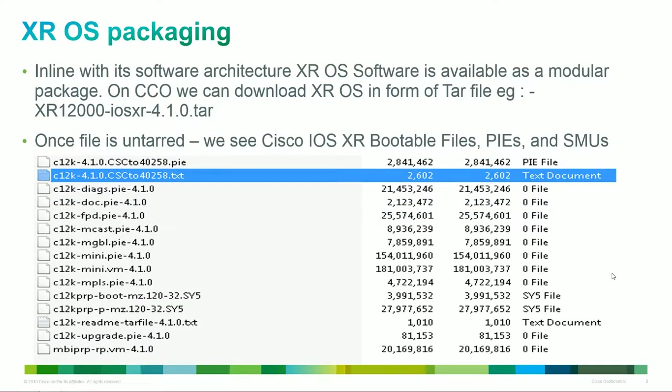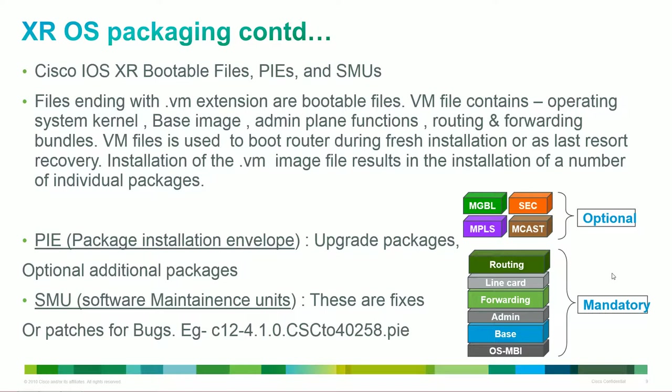Let's talk about how we install our XR OS. Just like in IOS, it's all about our configuration files, but here they're called .pies, and we have a .pie for very specific packages. Here is a quick overview of our .pies and .smus — our .smus are software maintenance units, which are fixes. Our .pies could be optional or mandatory depending on what we're doing. For example, if we're dealing with MPLS, we'd need a .pie that handles that. If dealing with multicast, we'd need a .pie for that.